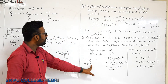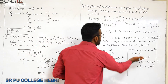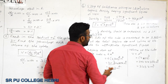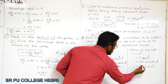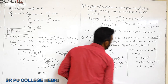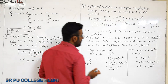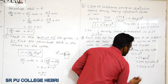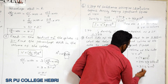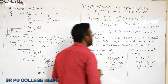For volume: V = l³ = (7.203)³ = 373.714754 m³. Rounding to four significant figures — the digit after 7 is 1, so it is dropped. Volume = 373.7 m³.